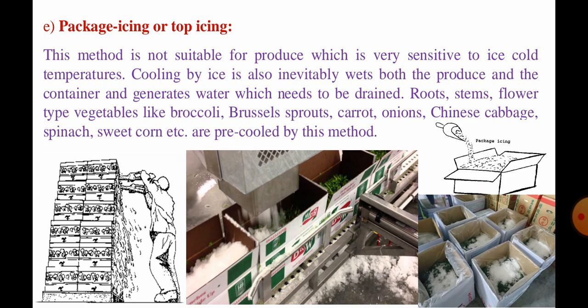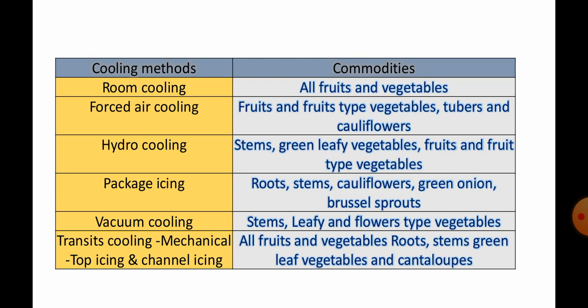Summary of cooling methods and applicable commodities: room cooling — all types of fruits and vegetables, but not highly perishable ones; forced air cooling — fruits and fruit-type vegetables, tubers, and cauliflower; hydro cooling — stem, green leafy vegetables, fruits and fruit-type vegetables; package icing — root, stem, cauliflower, green onion, and brussels sprouts; vacuum cooling — stem, leafy, and flower-type vegetables; transit cooling, mechanical top icing, or channel icing — all types of vegetables including root, stems, green leafy vegetables, and cantaloupes (muskmelon).